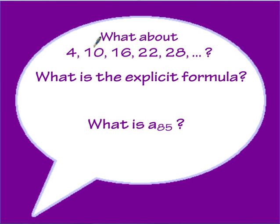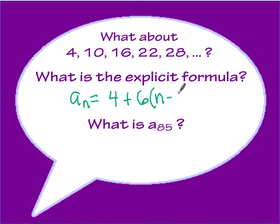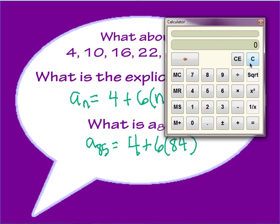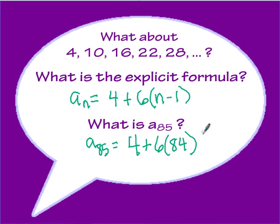Here's a different sequence: 4, 10, 16, 22, 28. We write the explicit formula: initial term 4 plus the common difference 6, multiplied by n minus 1. To find the 85th term, we calculate 4 plus 6 times 84. Using the calculator, the 85th number in this sequence is 508.